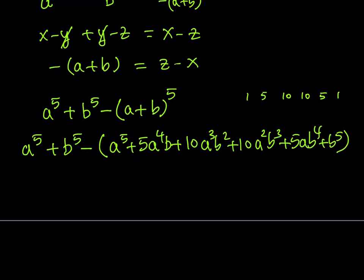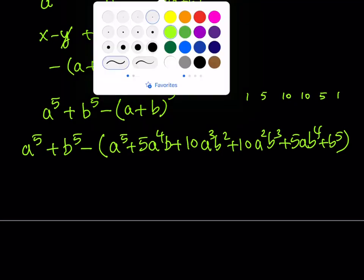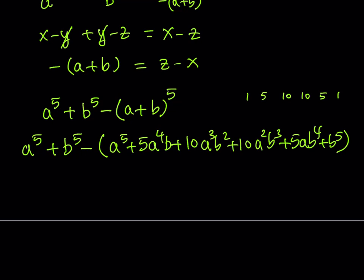This is a very long expression which has six terms, but it's going to simplify. When you subtract this from a to the fifth plus b to the fifth, you're going to get something nice. That's the whole purpose. When we expand it, a to the fifth and a to the fifth cancels out, and b to the fifth and b to the fifth cancels out.